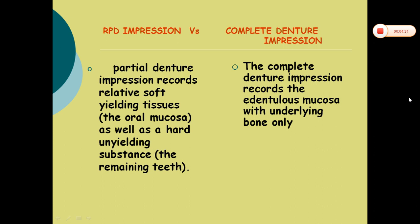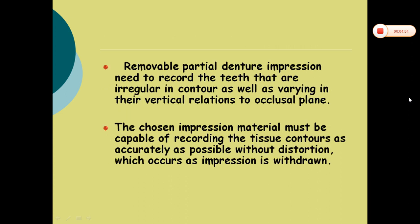Partial denture impression records relatively soft yielding tissues as well as the hard underlying substance, that is the remaining teeth, whereas complete denture impression records the edentulous mucosa with underlying bone only. So in RPD you have to record both soft tissue as well as the teeth. Removable partial denture impression needs to record the teeth that are irregular in contour as well as varying in their vertical relations to the occlusal plane. The chosen impression material must be capable of recording the tissue contours as accurately as possible without distortion, which occurs as the impression is withdrawn.